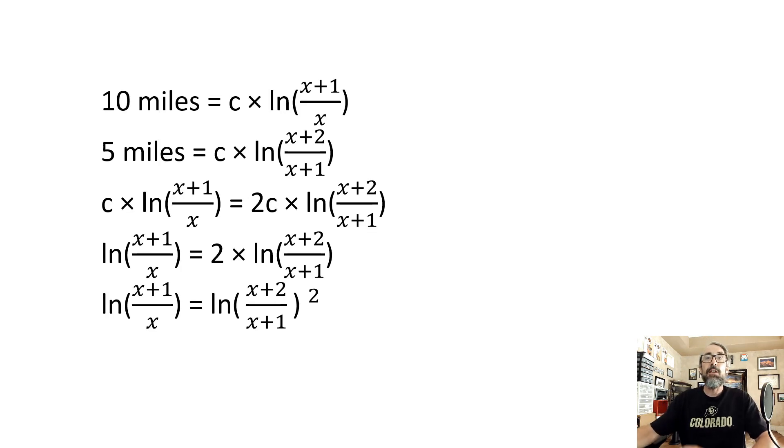And now let's equate those two equations. So we're going to have to double the second one or the distance traveled in the second hour to equal that in the first hour. And so expressing the 10 miles two different ways, we get c times the natural log of x plus one over x is equal to two times c times the natural log of x plus two over x plus one. So we can cancel out the c from both sides and then move that two from out front on the left to squaring x plus two over x plus one because a times the natural log of b is equal to b to the power of a, as should be common knowledge.